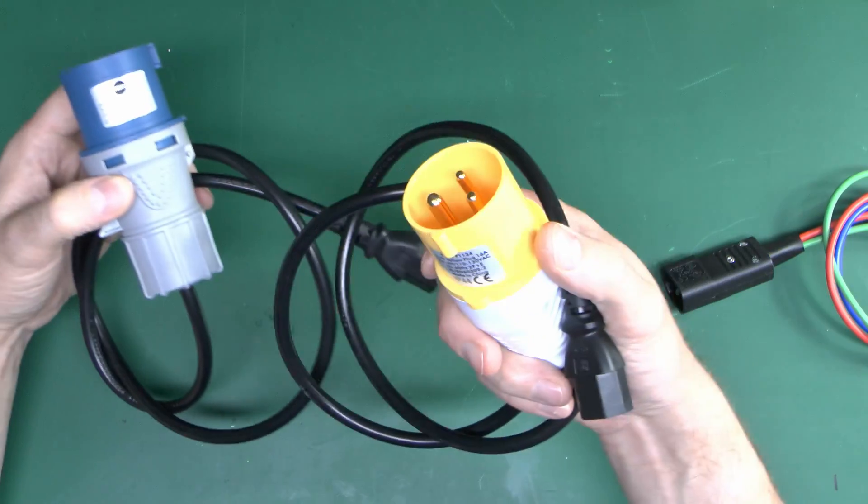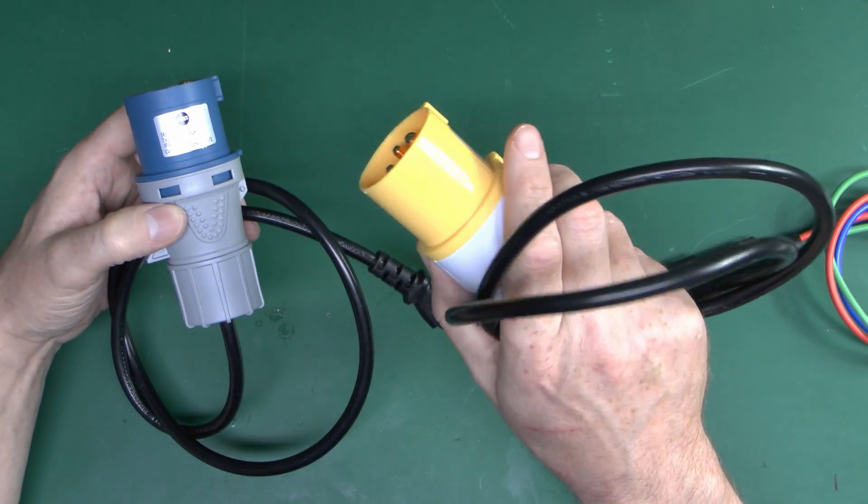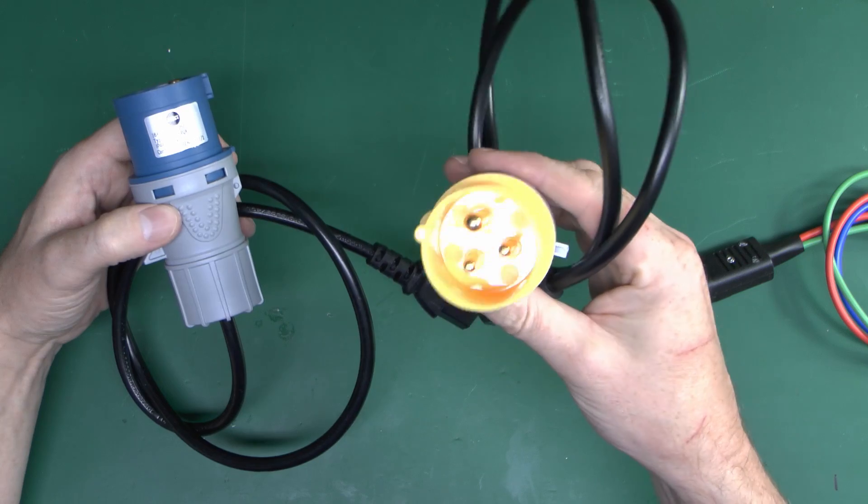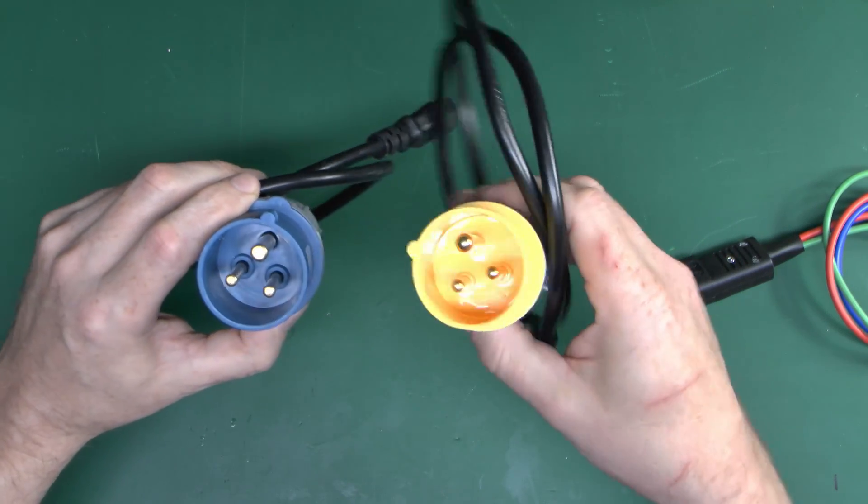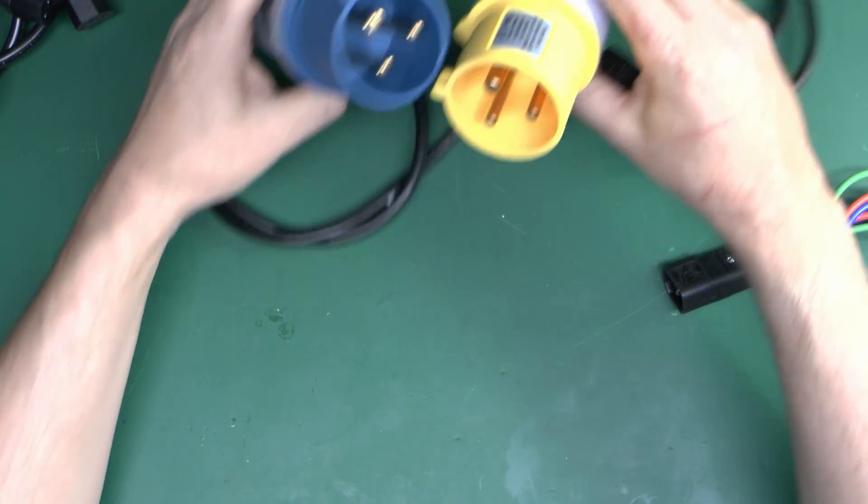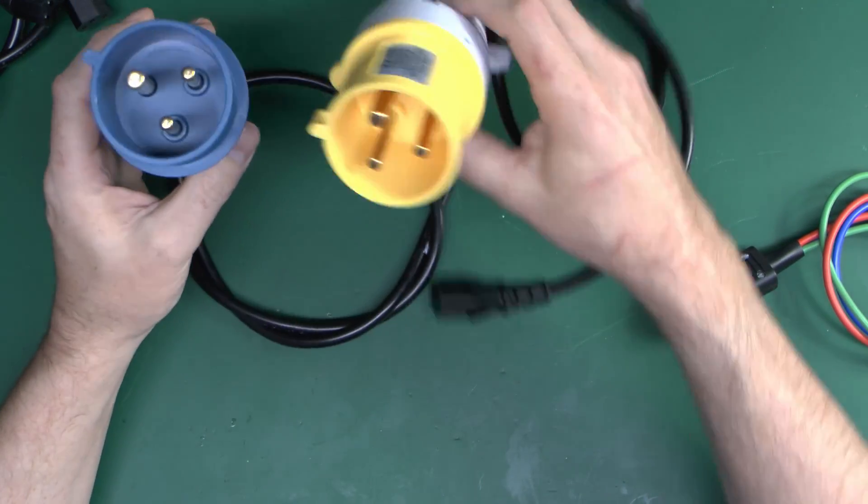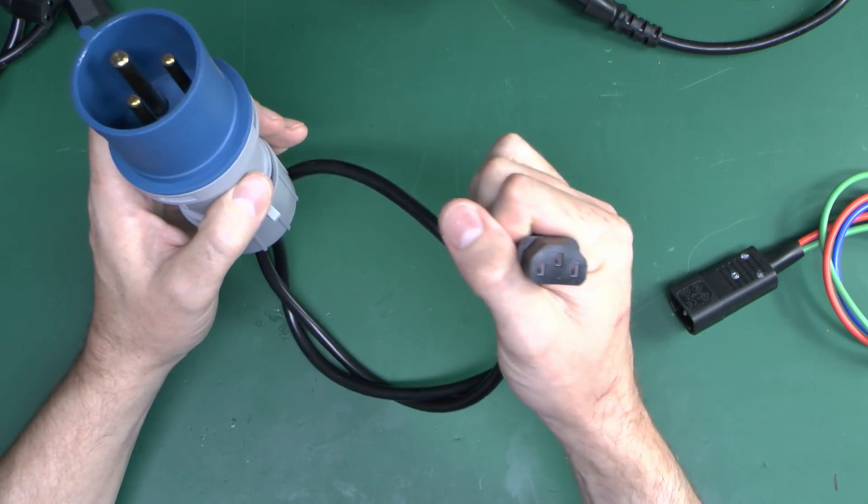We do also have the yellow one, which is a 110 volt building site type of thing, with the 55 volts to earth arrangement. So two of those, same plug end of course. And then there's also the 32 amp versions, which again are somewhat larger. But again, the same principle there, and the same exact piece on the end.